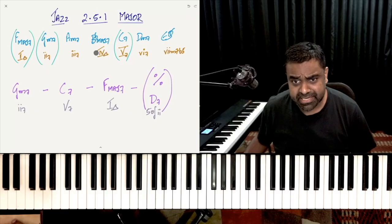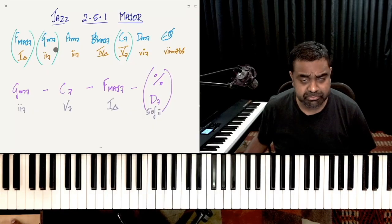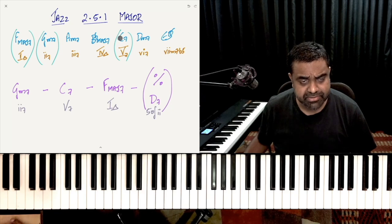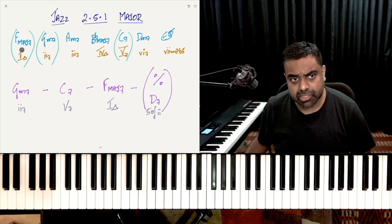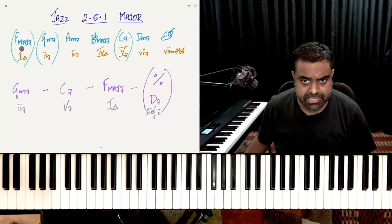In this particular lesson, I'm going to start off with the first part, which is the Jazz 2-5-1 progression on the major scale. Using the major scale — I'm using F major for you — which is F, G, A, B flat, C, D, E, F. And these are all the seventh chords of the F major scale.